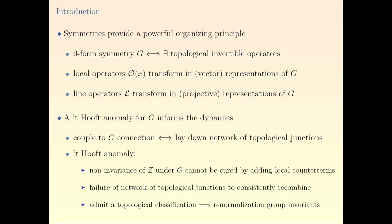In the language of topological networks, the failure of the partition function to be invariant is a statement that when you do a gauge transformation, the network of junctions reconnects, and there can be an obstruction to this reconnection being consistent. An important point about anomalies is that they admit a topological classification — described by a topological invariant, in modern language by an invertible field theory. Because they're topological, they don't depend on the energy scale and are therefore renormalization group invariants. That's why they're useful for diagnosing the dynamics of a system.